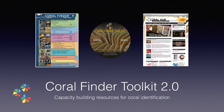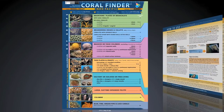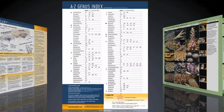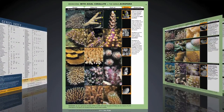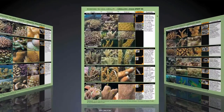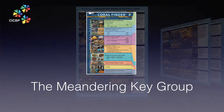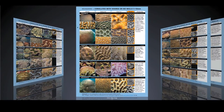Welcome to the fourth training movie in the Coral Finder Toolkit 2.0 training movie series. In the previous movie, we were introduced to the basic structure of the Coral Finder, Coral Finder Key Groups, and the workflow for identifying branching corals. In this movie, we will demonstrate the Meandering Key Group, while focusing on some strategies for how to work smart.